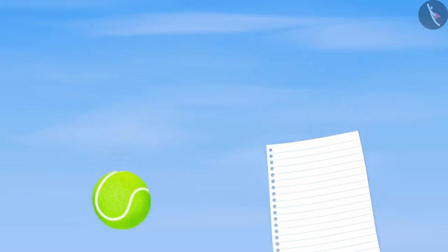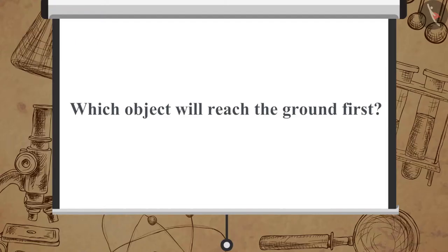Take a sheet of paper and a small ball and drop both the things at the same time from the first floor of a building. What do you think? Which object will reach the ground first? We notice that the ball reaches the ground first and then the paper.